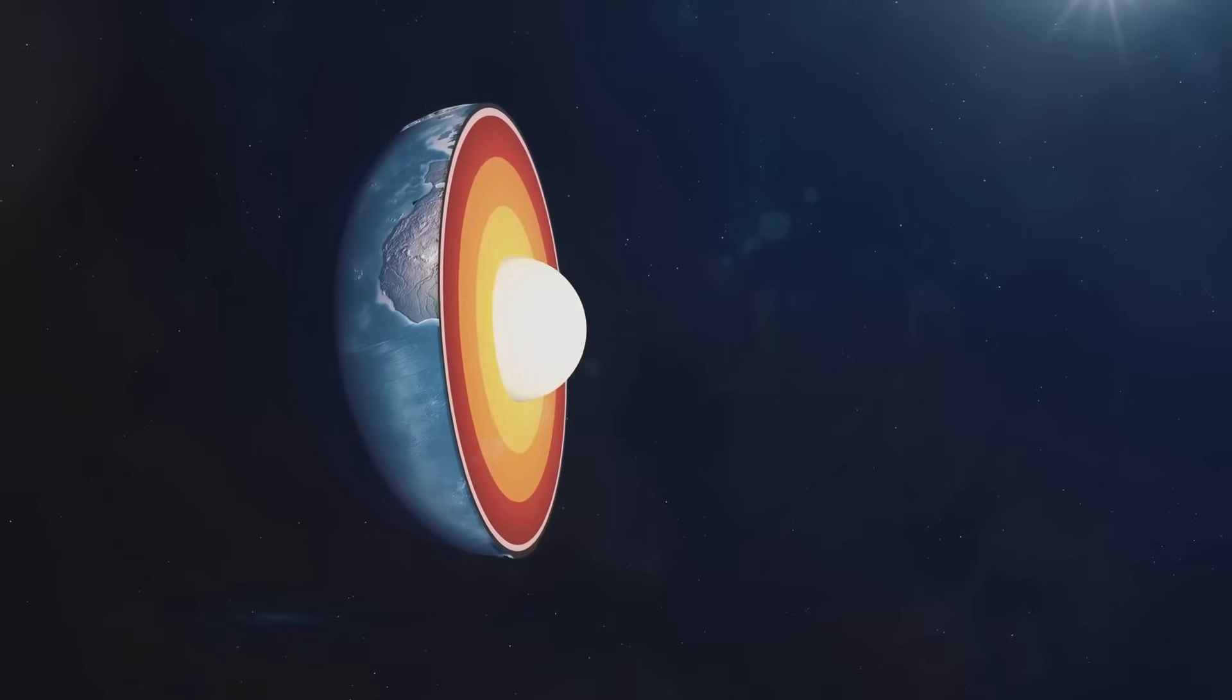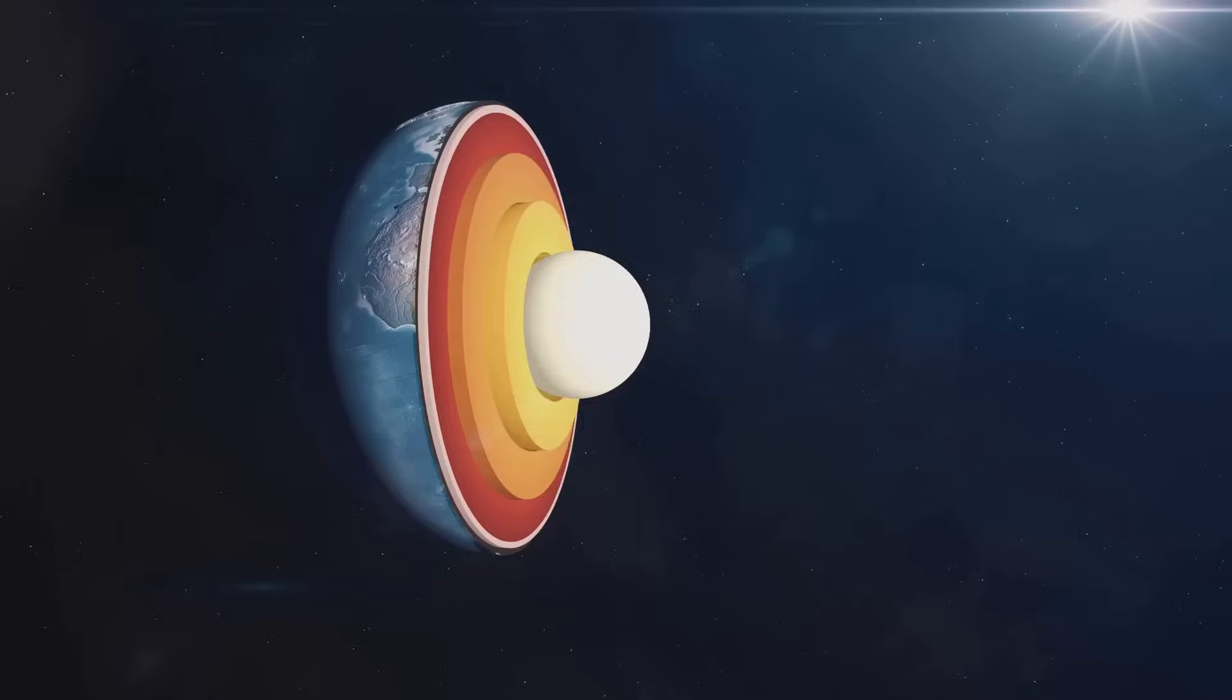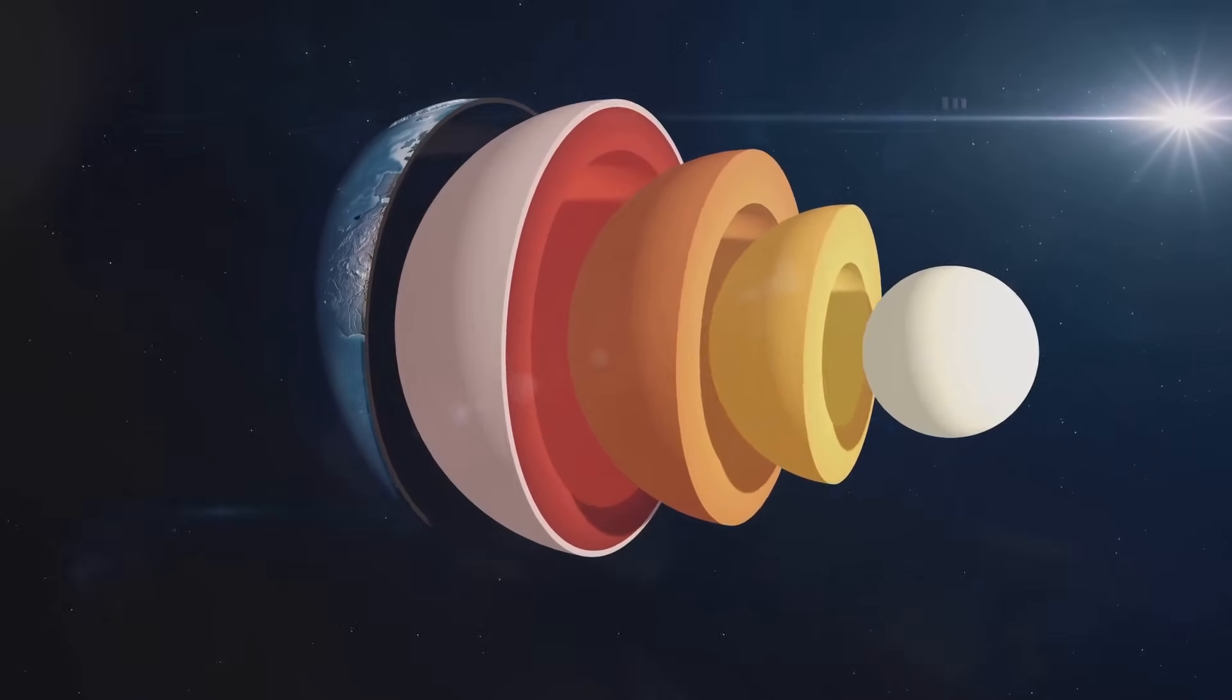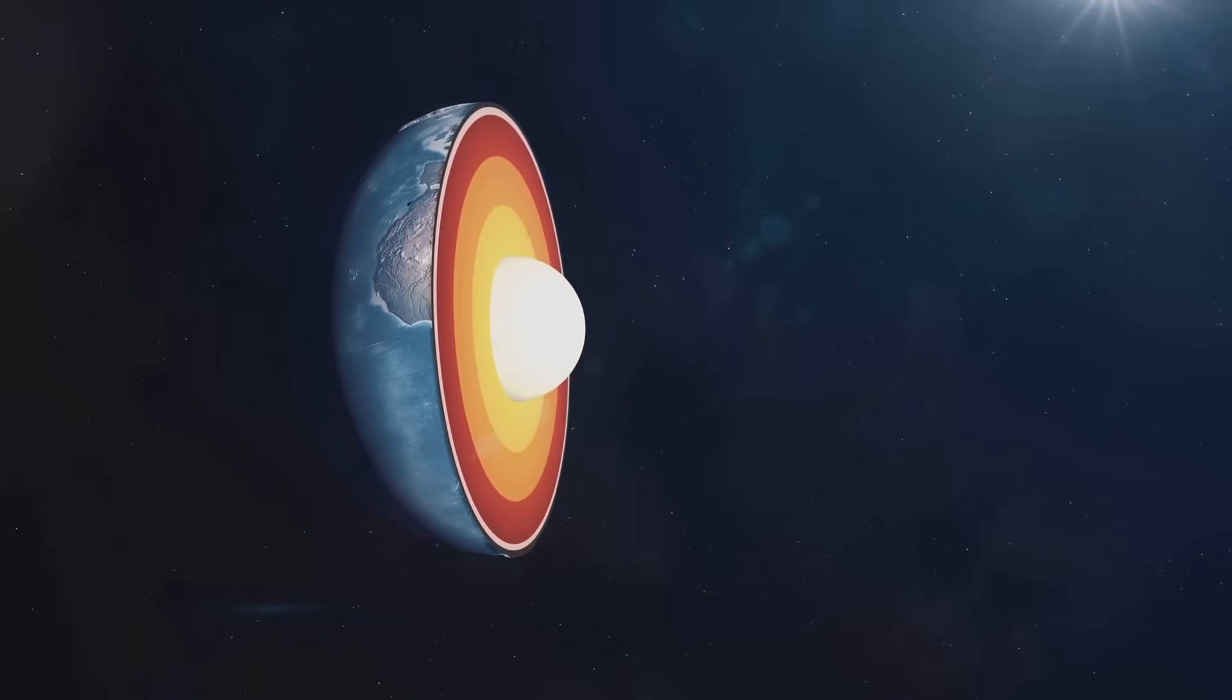Imagine standing on a giant sphere that's spinning in space and right at the center of the sphere is another, tinier sphere, spinning all on its own. That's Earth and its inner core.